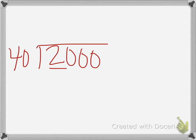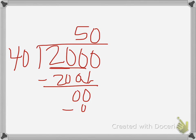Well, $40 doesn't fit into $20, so we're going to look into $200, and $40 goes into $200 five times. We bring down that zero. It goes in zero times. And we are done.